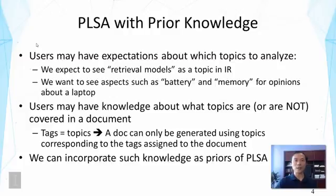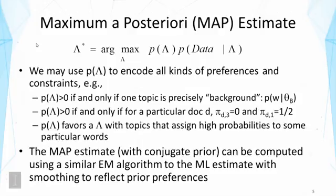The question is: how can we incorporate such knowledge into PLSA? It turns out there's a very elegant way of doing that — to incorporate such knowledge as priors on the models. In Bayesian inference, we use a prior together with data to estimate parameters, and this is precisely what will happen. We can use maximum a posteriori estimate, also called MAP estimate, and the formula is given here.